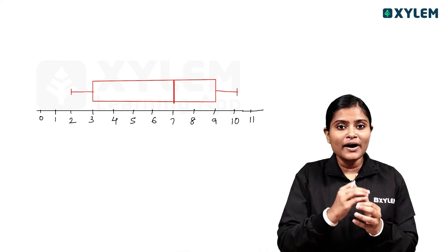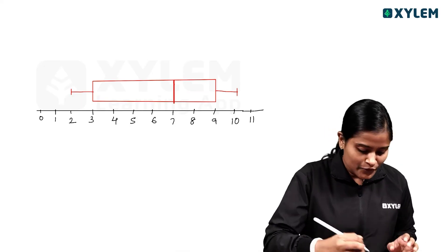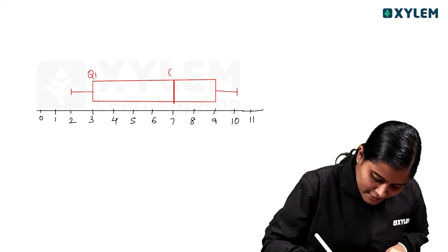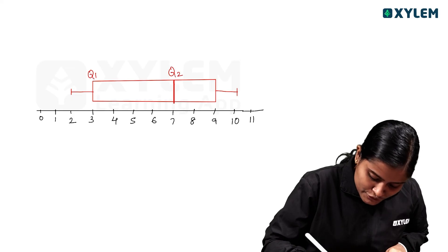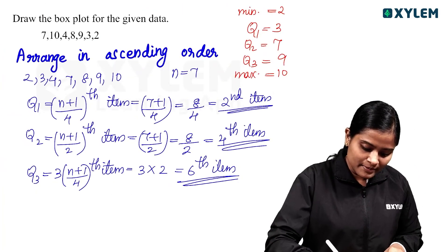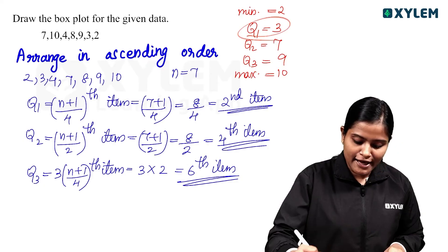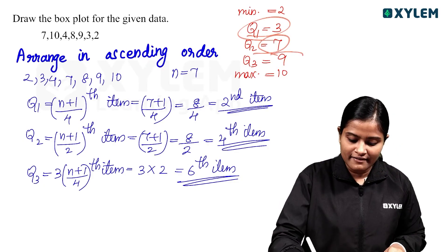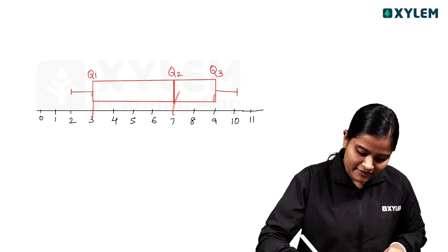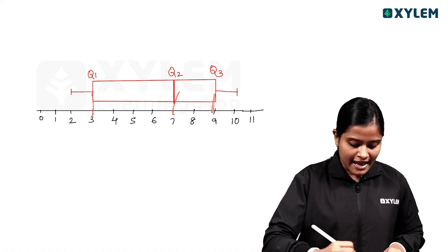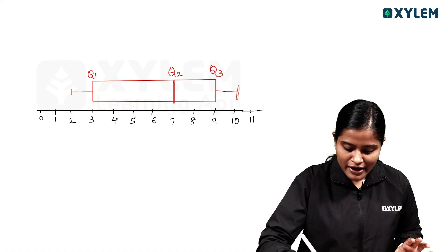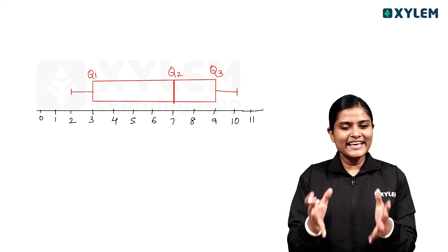So this is the boxplot. If we add the marks: this is Q1, this is Q2, and this is Q3. Q1 is 3, Q2 is 7, and Q3 is 9. The minimum value is 2 and the maximum value is 10.